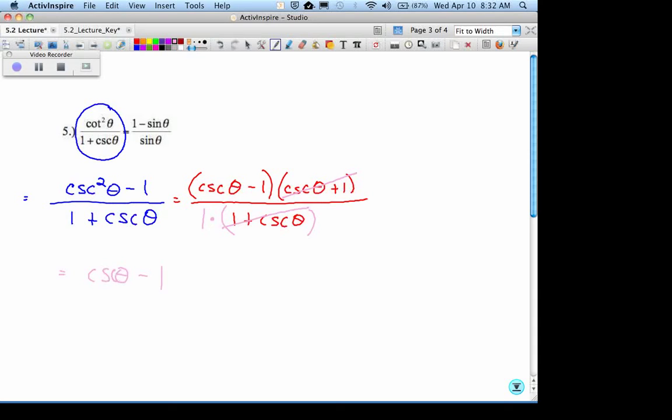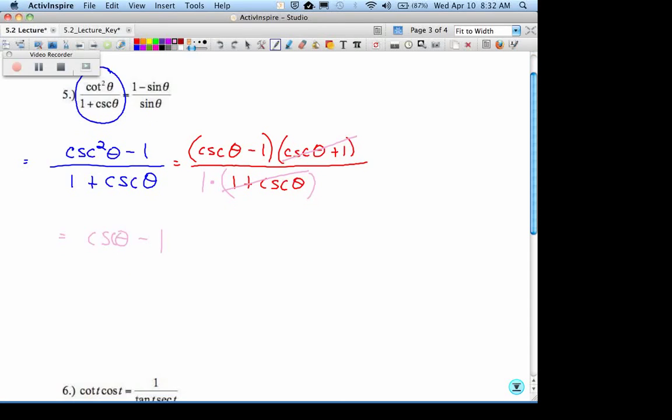Oh, cosecant of theta minus 1. But I'm supposed to get to 1 minus sine over sine. So, we're closed. What's another way to write cosecant?